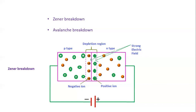We will first discuss Zener breakdown. Consider a PN junction diode with a depletion region — a region devoid of mobile charge carriers, but with positive and negative ions separated over a distance. Since it is reverse biased, the p-type material is connected to the negative terminal of the voltage source, and a negative voltage is applied across the depletion region.